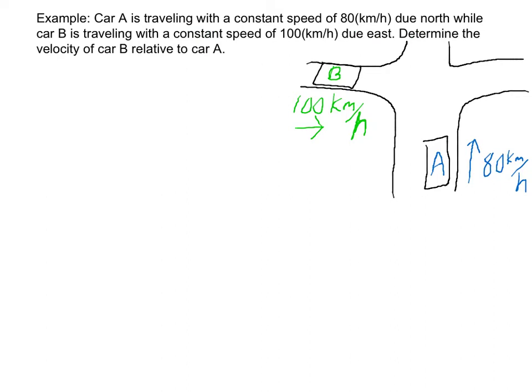All right, so now here's an example problem. Car A is traveling with a constant speed of 80 kilometers per hour due north, while car B is traveling with a constant speed of 100 kilometers per hour due east. Determine the velocity of car B relative to car A. So car B is going that way, car A is going this way. Find the velocity of car B relative to car A.